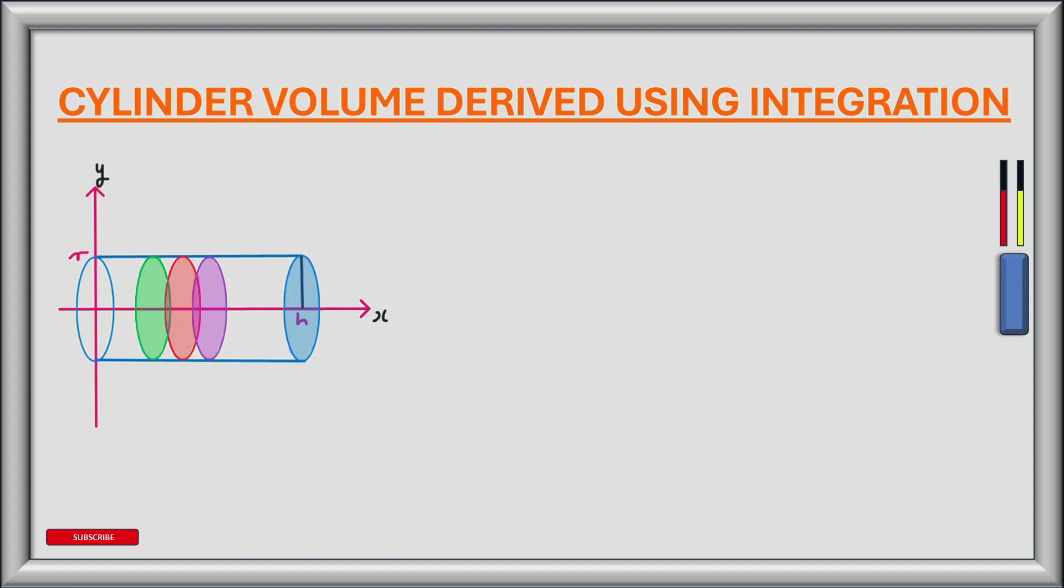Here we have an x-y axis. If we take this line which cuts the y-axis at point r and spin it around the x-axis, it creates a cylinder.